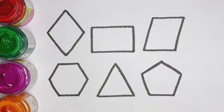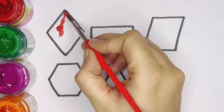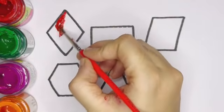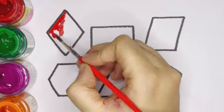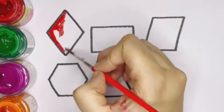Now let's color the shapes. We followed the shapes. Red color, rhombus.